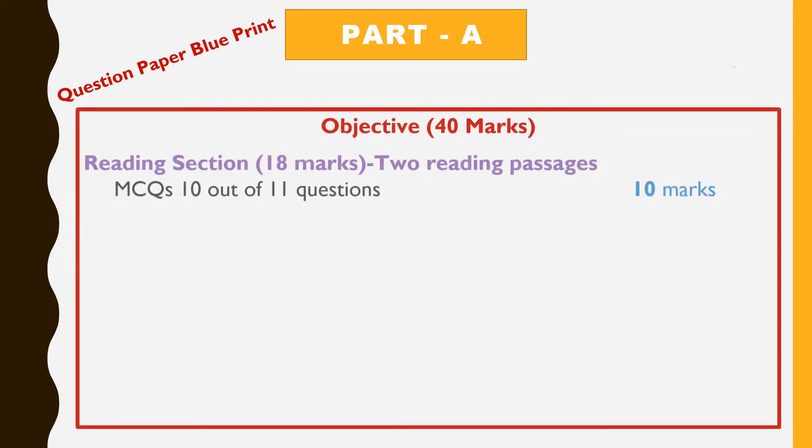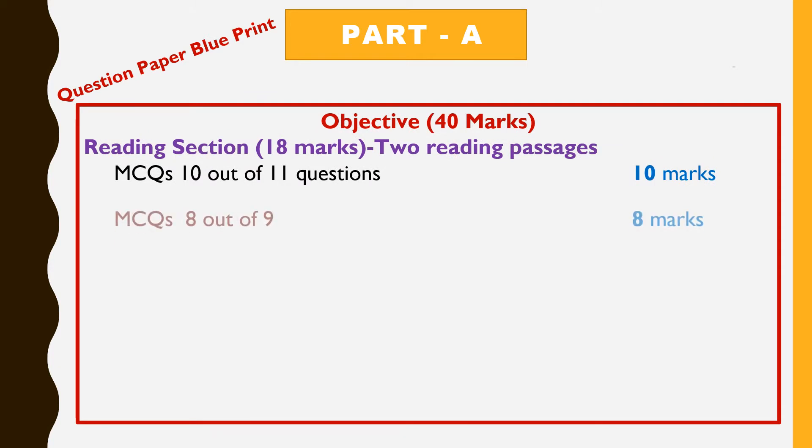Let's discuss the blueprint of English core paper. As I already mentioned that part A is objective part. Reading section will be of 18 marks. Question number 1 will be based on unseen passage. And you will be asked multiple choice questions based on unseen passage just to assess your comprehension. Out of 11 questions, you will have to attempt 10 questions and it carries 10 marks.